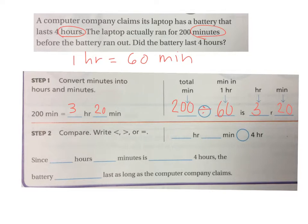Now let's compare. 3 hours and 20 minutes, is that greater than, less than, or equal to 4 hours? Less than. So our answer we could explain, since 3 hours and 20 minutes is less than 4 hours, the battery does not last as long as the computer company claims.